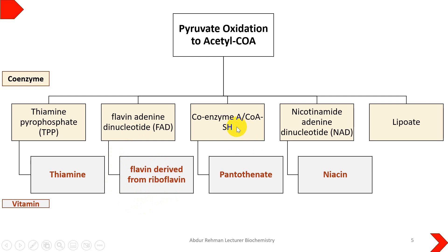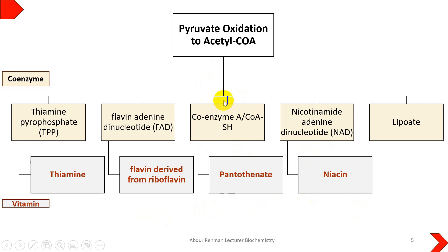Coenzyme-A is another very important coenzyme that requires pantothenate vitamin, and nicotinamide adenine dinucleotide (NAD) requires niacin. Deficiency of any of these vitamins will disrupt the conversion of pyruvate to acetyl-CoA, so vitamins are very important for these coenzymes. The last coenzyme is lipoate, which also plays an important role in this conversion.